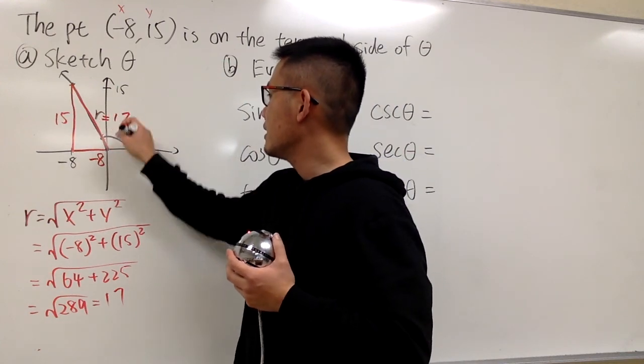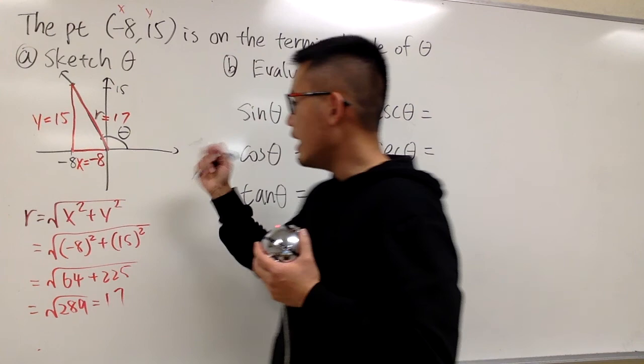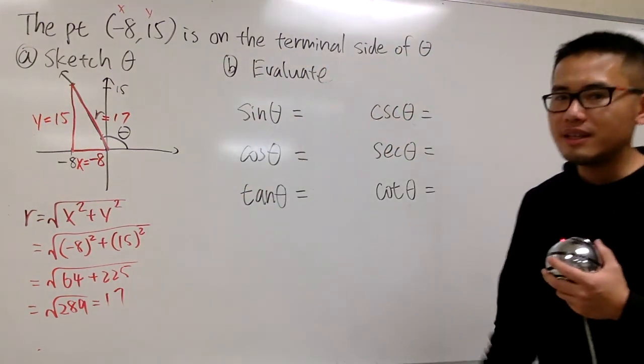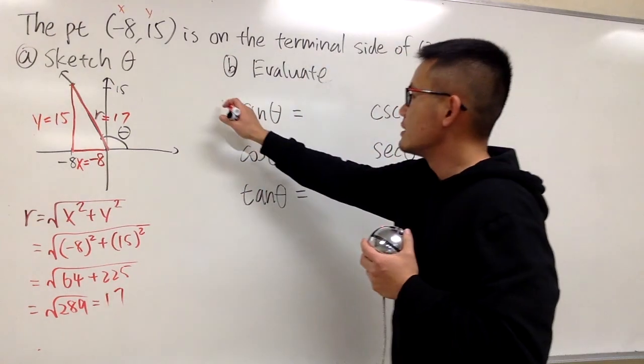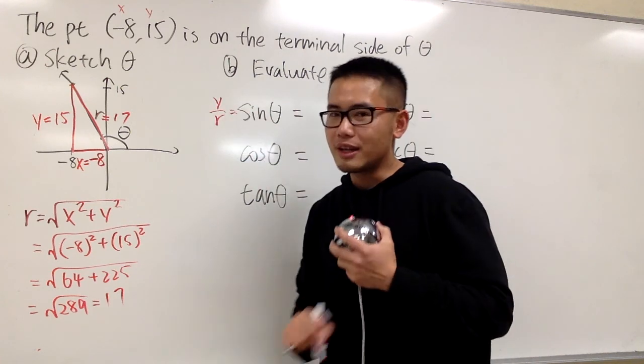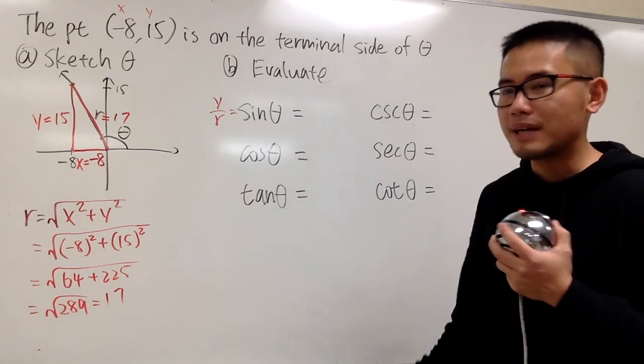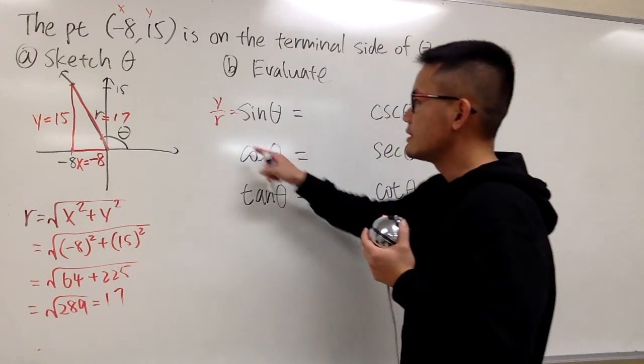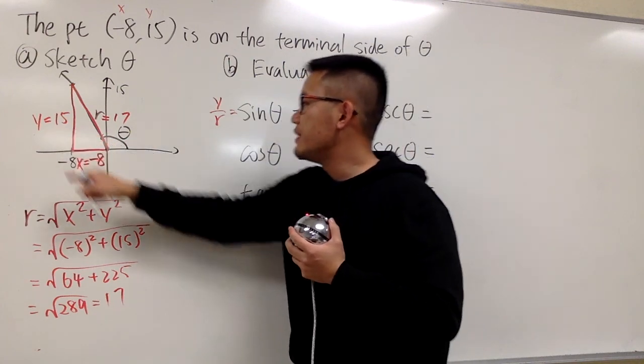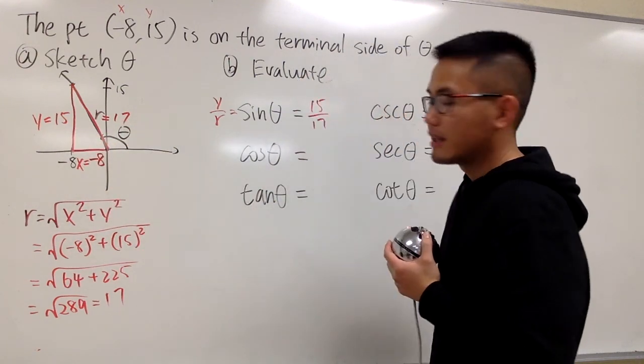So r is 17. I can label this as y is 15, and the x is negative 8. And now we are ready. Sine is y over r. And by the way, r is always positive. Keep that in mind. x and y, sometimes you have to be careful, because they can be negative or positive. In this case, y over r. y is 15, r is 17. So we have 15 over 17.